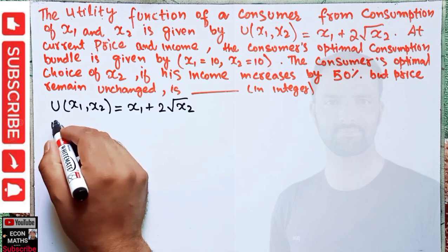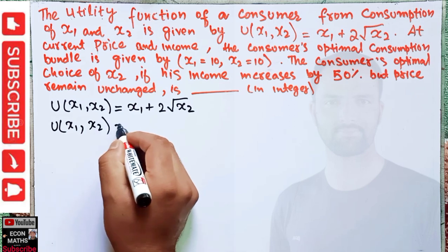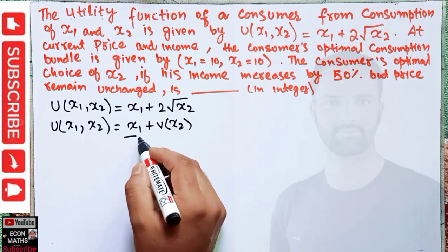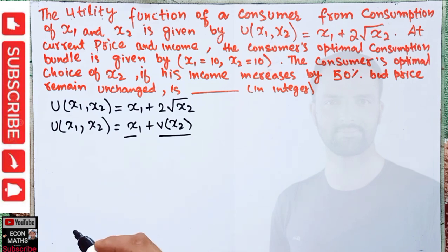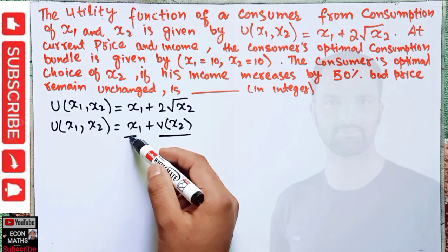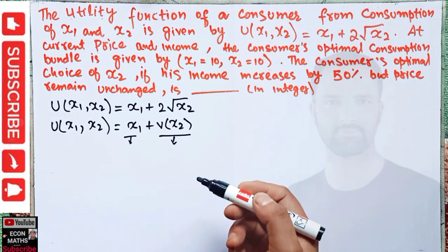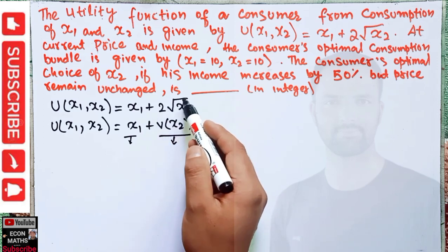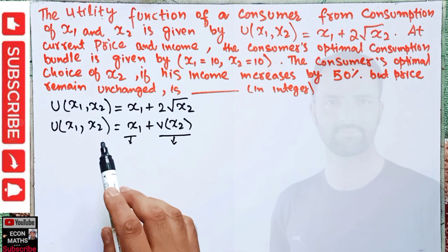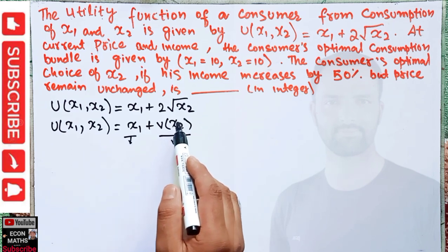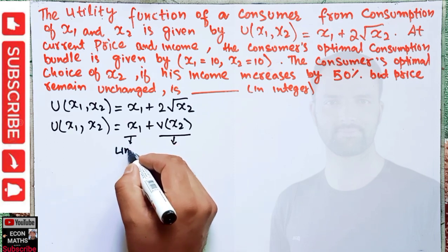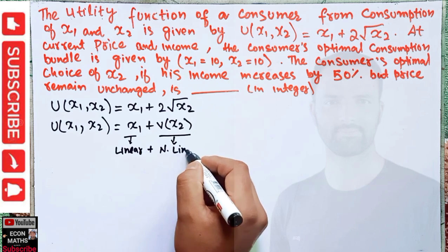Generally, a quasi-linear utility function is written as u(x1, x2) = x1 + v(x2), meaning the utility function is linear in good x1 and nonlinear in good x2. So the quasi-linear utility function is composed of a linear component for x1 and a nonlinear component for x2 — here we have the square root, which is a nonlinear term.